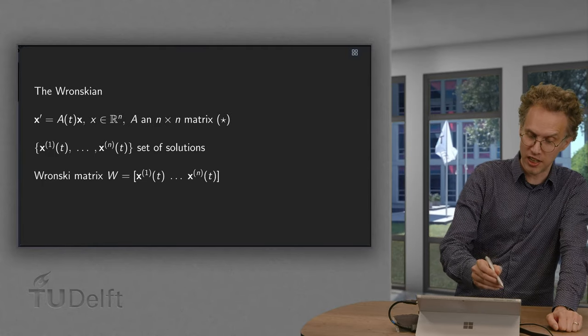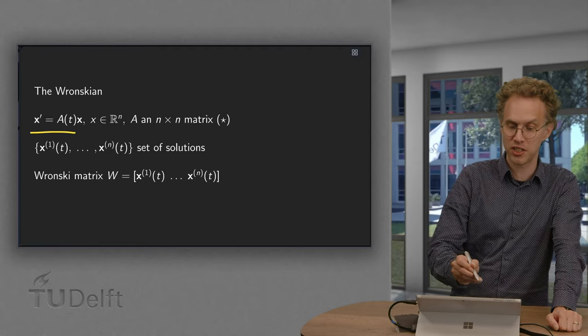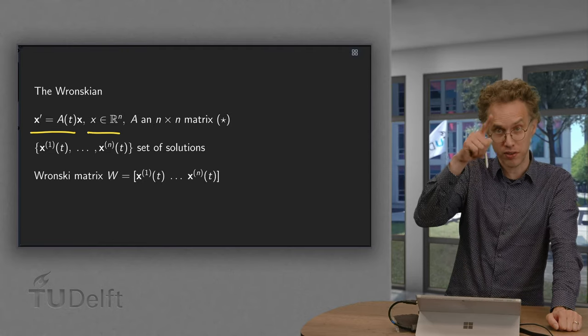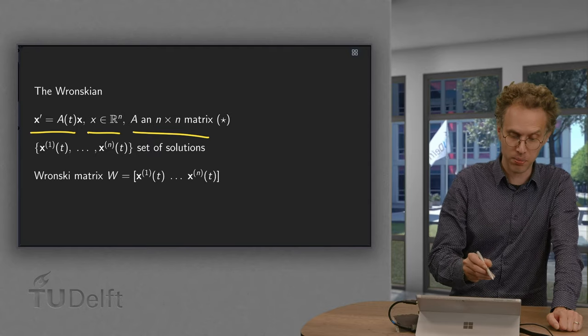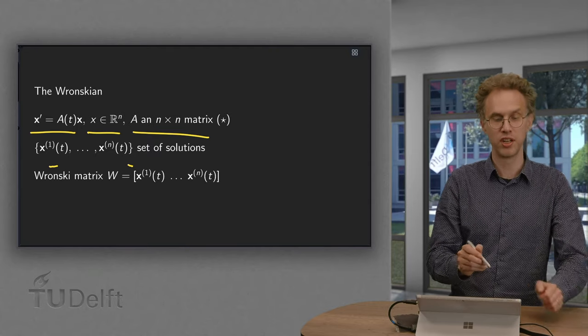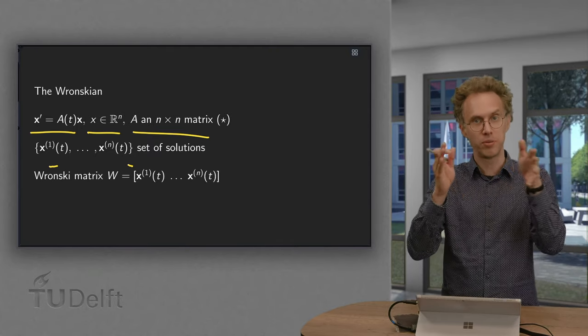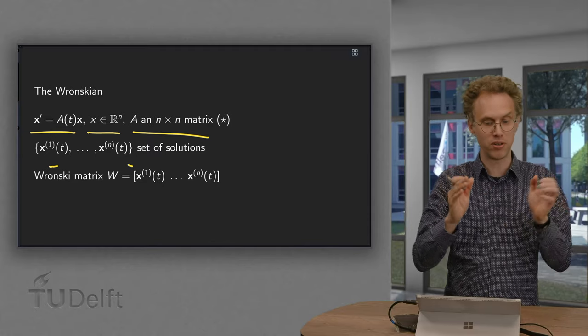So we are again homogeneous and linear, so x' equals A times x, x in R^n, vector of n components, and A an n×n matrix. And suppose we have found a set of solutions x^(1), x^(2), x^(3), up to x^(n). Suppose we have found those already.